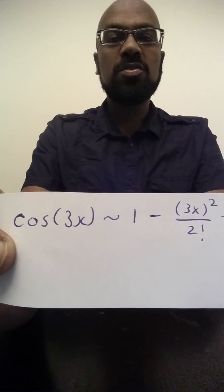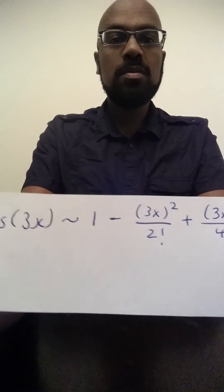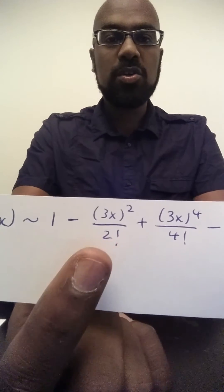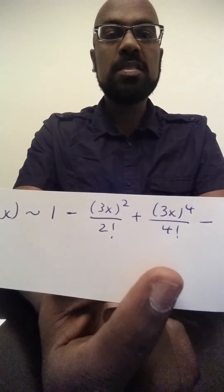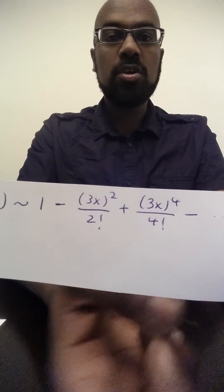So what happens as x goes to 0? As x goes to 0, this x squared term dominates all the latter terms by far.